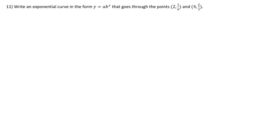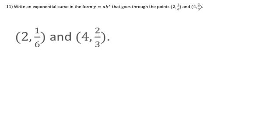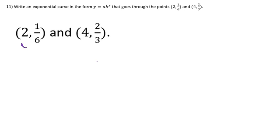Question 11 asks us to write an exponential curve in the form y equals a times B to the x power that goes through the points (2, 1/6) and (4, 2/3). We're given two points, each with their own x and y values. The strategy is to write two forms of this equation — one for each point — and then solve for parameters a and B.